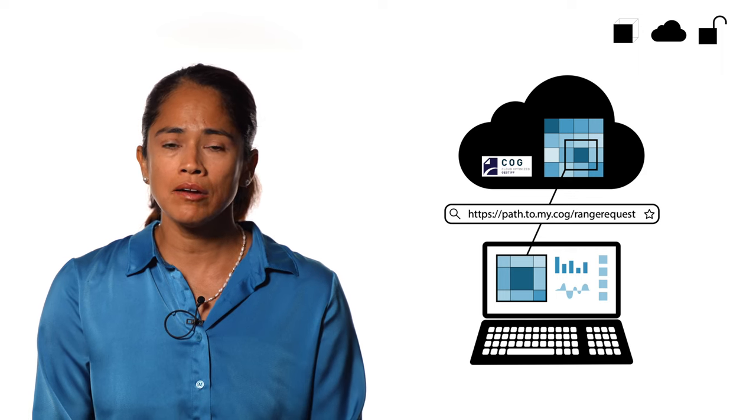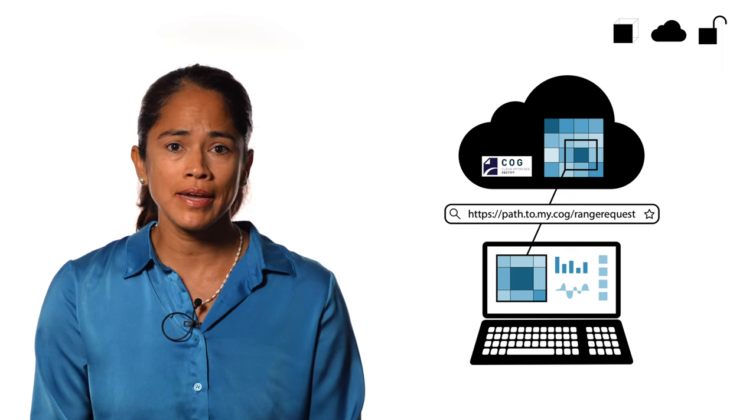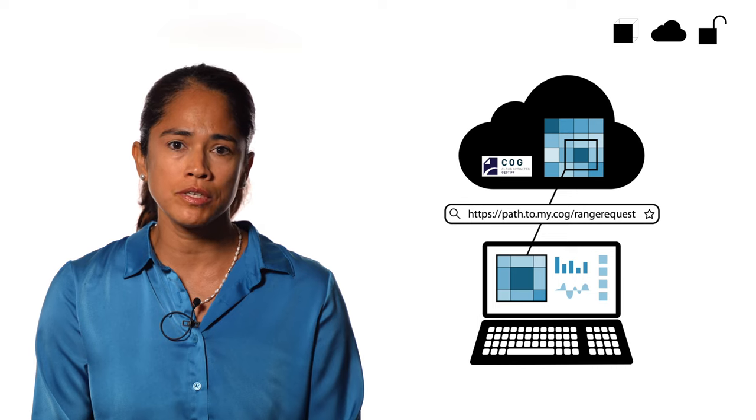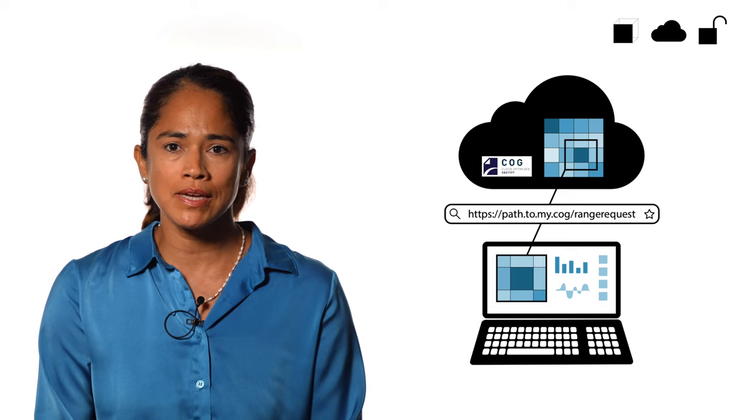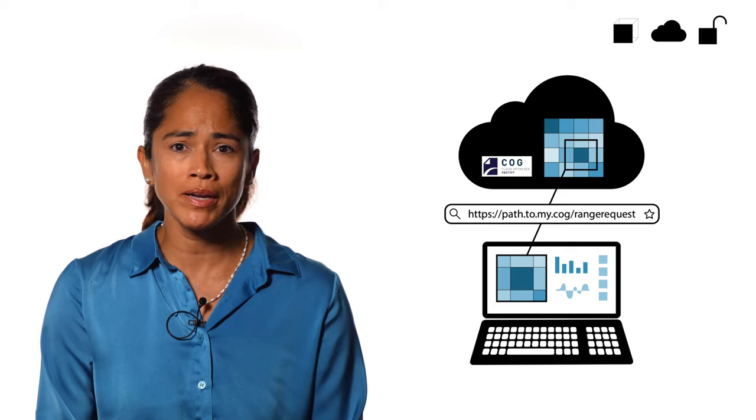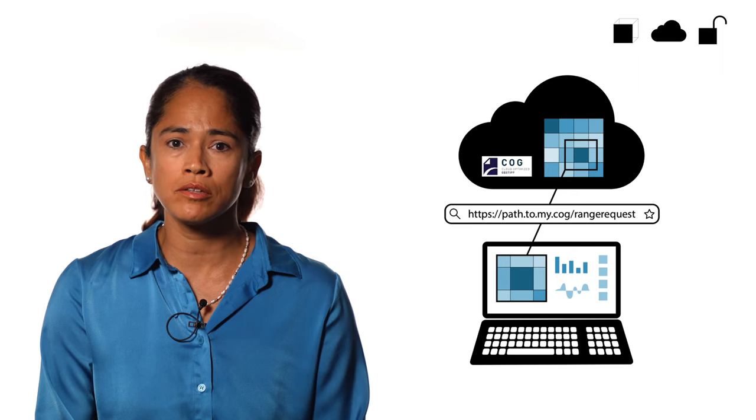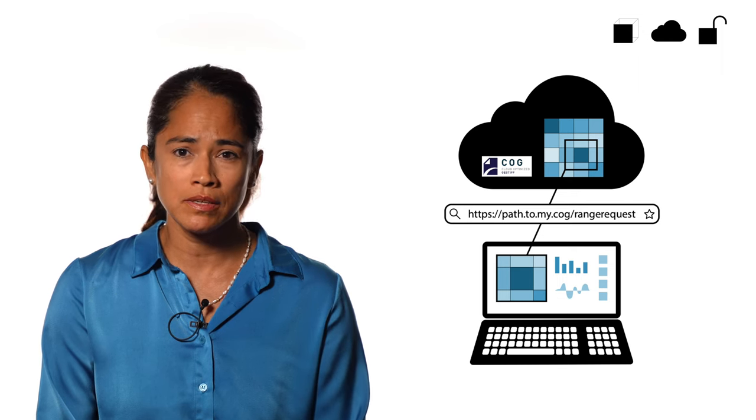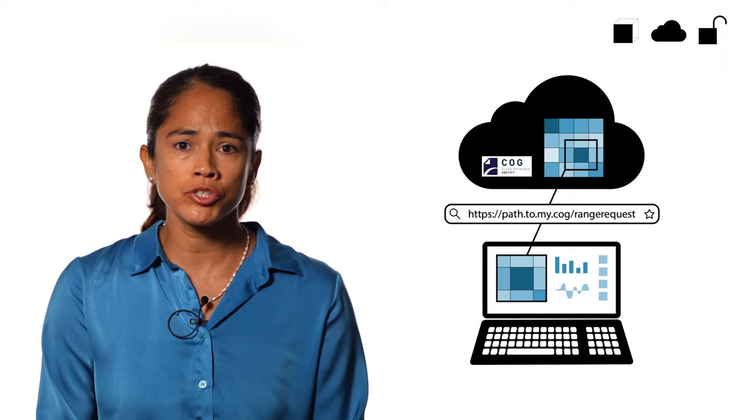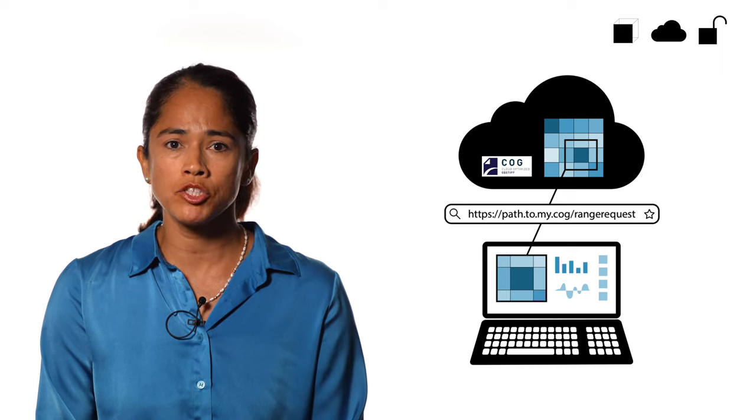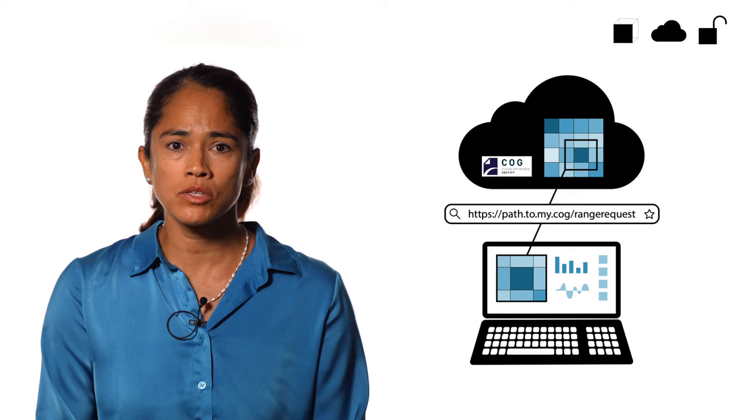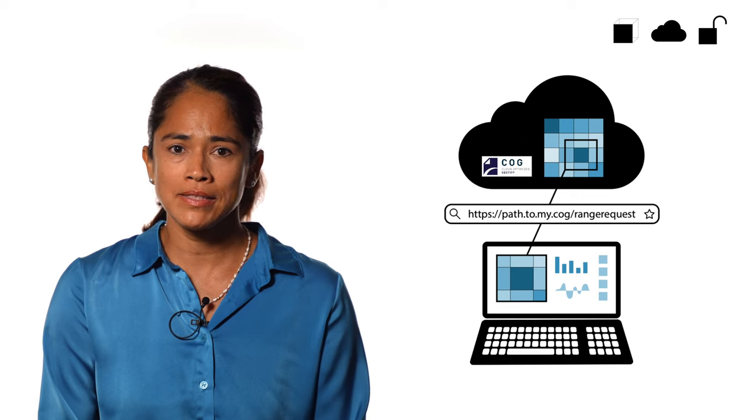For instance, cloud-optimized GeoTIFF (COG) is an enhanced version of GeoTIFF. COGs preserve the same data as GeoTIFFs, but include special headers called image file directories (IFDs). These IFDs allow users to make HTTP range requests so they can access only the data they need, enhancing efficiency.